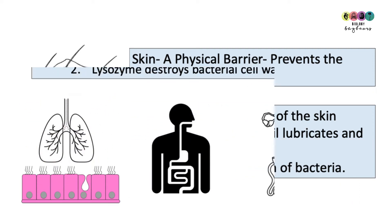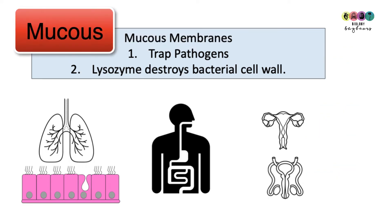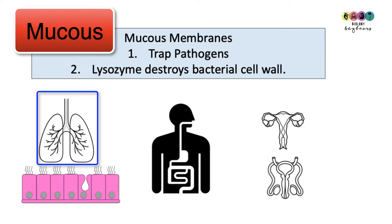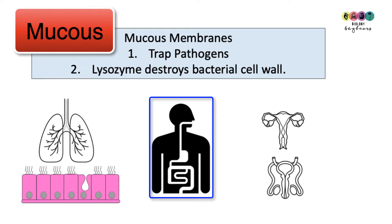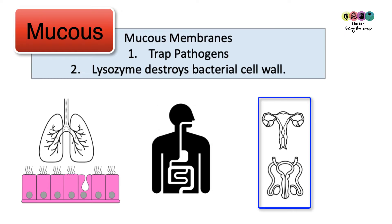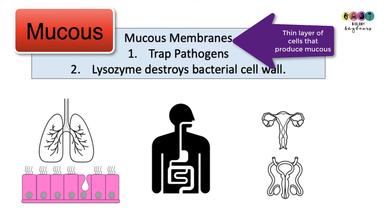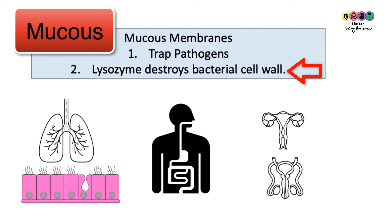Next is mucus — a sticky substance that traps pathogens, produced by mucus membranes. Mucus membranes are thin layers of cells lining many parts of the body, including our respiratory system, digestive tract, and reproductive systems. Mucus also contains lysozyme, an enzyme that breaks down bacterial cell walls.